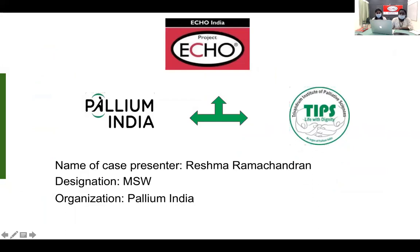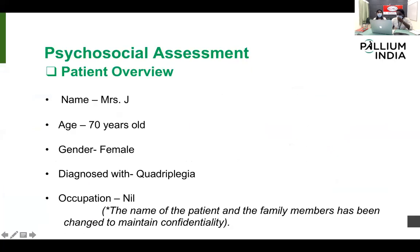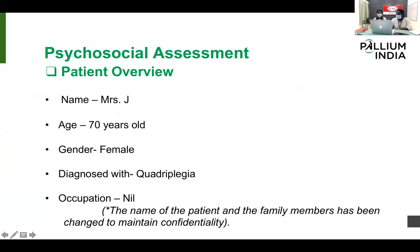Good afternoon to all. I'm Reshma Ramachandran, working in Pallium India as a medical social worker since 2017. Mrs. J is a 70-year-old female diagnosed with quadriplegia. She does not have any occupation before or after illness, but she is a graduate in home science. She became quadriplegic after a fall from height since 1997, had recurrent infection, fever and bursa, and became bed-bound over 23 years. She also has type 2 diabetes mellitus and hypertension since 2014, episodes of seizures and is on neuro-medications, and has had dementia since 2019 and is disoriented.